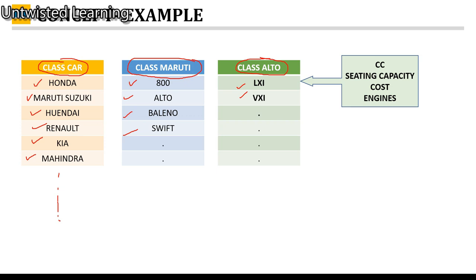Depending on the focus and requirement of programming, you can create multiple classes and multiple objects. Relating to the Lxi model, you may have different attributes like cubic capacity, seating capacity, cost, engine size, number of cylinders, or engine type — whether inline or V cylinders. So you can have multiple attributes relating to class Alto.